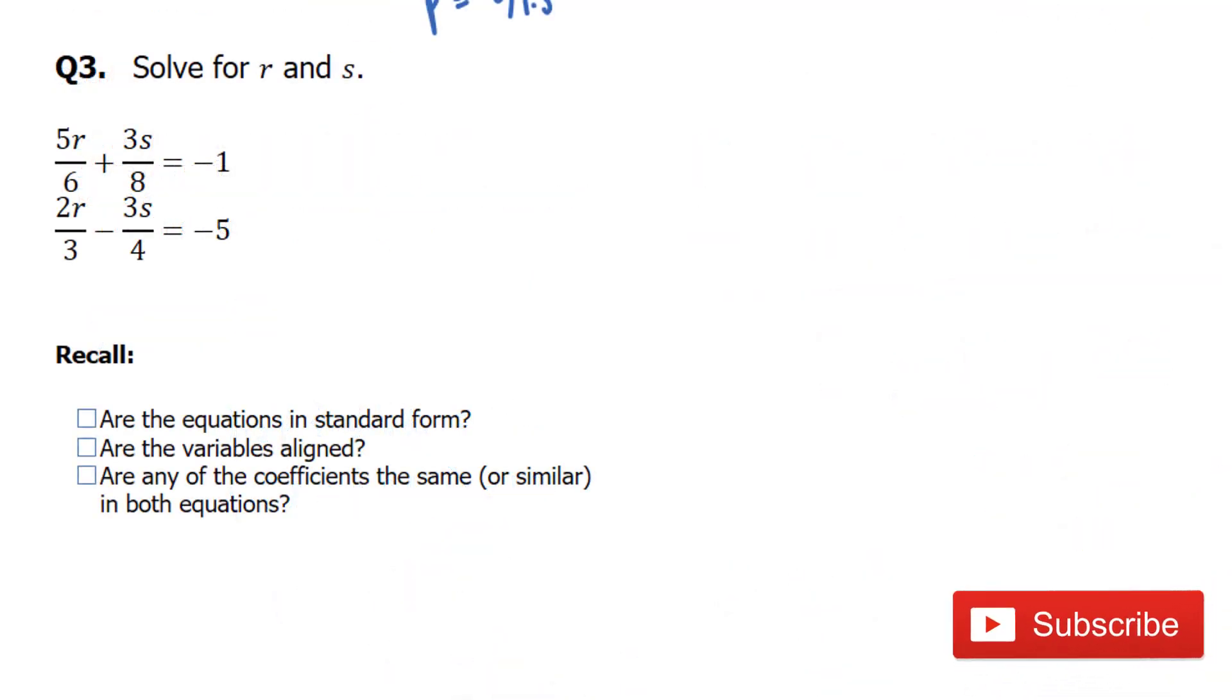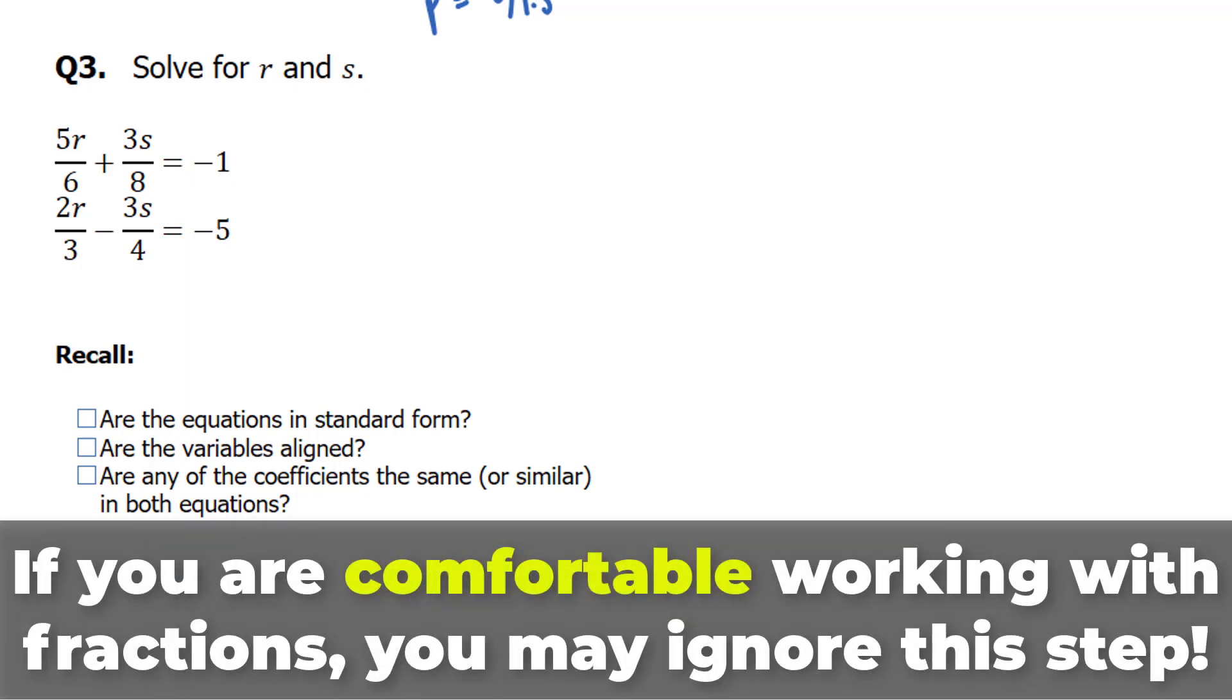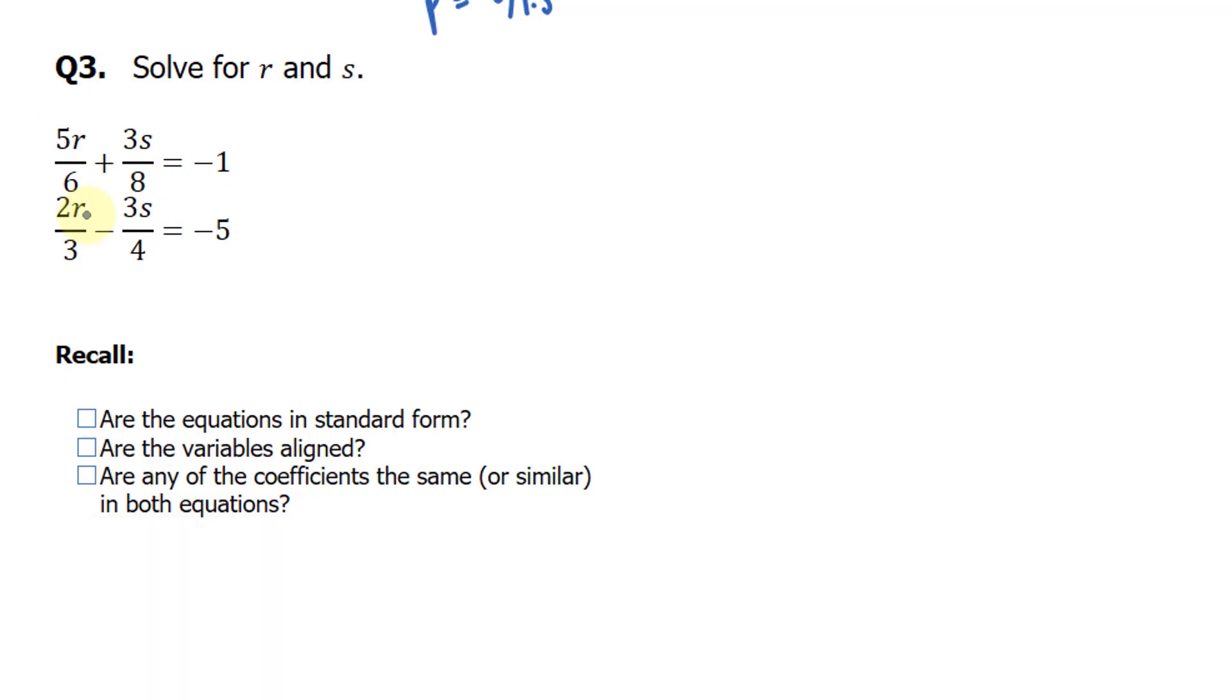Question 3 asks us to solve for R and S, and here we have fractional coefficients. Before we can even start the checklist process, we want to make sure that these fractions disappear. Because it's hard to work with fractions in some cases, and it's best that they are converted into integers. So we can convert these fractions into integers if we can find the lowest common denominator and multiply the entire equation by it. Between 6 and 8, the lowest common denominator is 24. And between 3 and 4, it is 12.